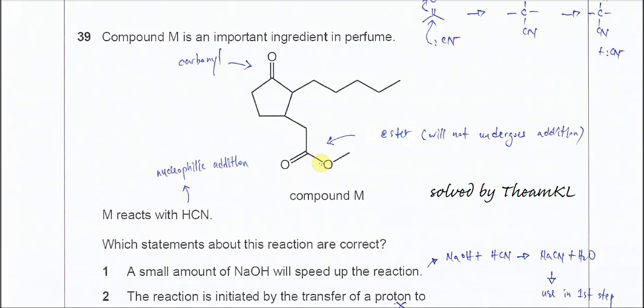Question 39. Compound M is an important ingredient in perfume because it has an acid group. M reacts with HCN. Which statements about these reactions are correct?